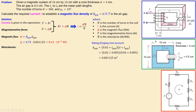Now we set up the equivalent electric circuit. The magnetomotive source drives reluctances R1 through R5, where R1–R5 represent paths L1–L5 and R_g represents the air gap. We can simplify by combining R1, R2, R3, R4, and R5 into a single R_core. The total reluctance is then R_total = R_core + R_gap.